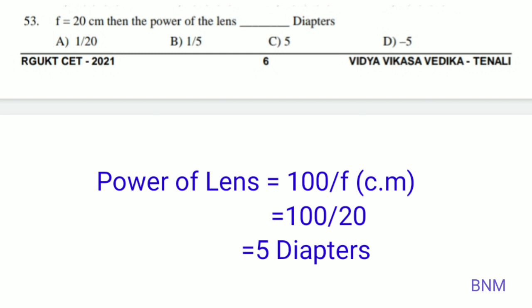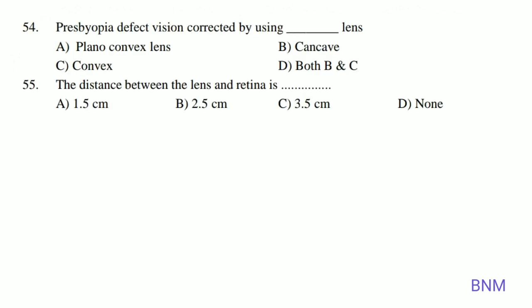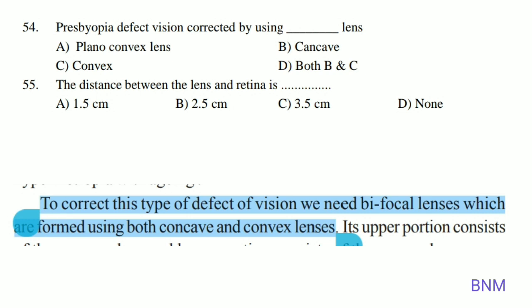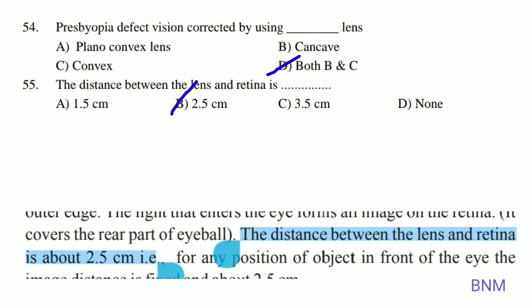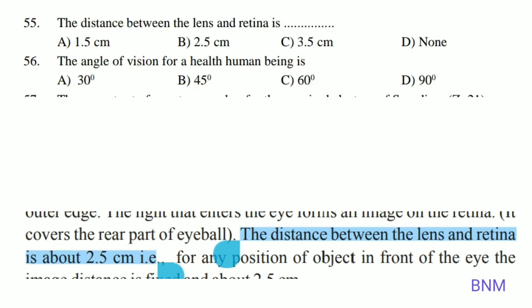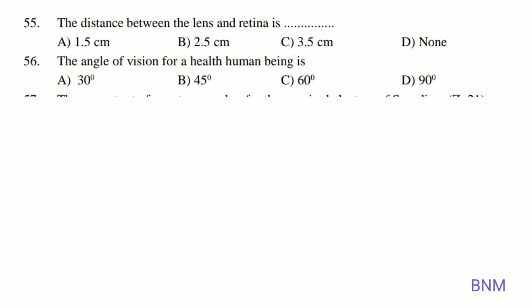If F equals 20 cm, then the power of the lens in diopters: power equals 100 divided by F in cm, so 100 divided by 20 equals 5 diopters. The right answer is 5 diopters. Presbyopia defect of vision is corrected using bifocal lens — both concave and convex lens, options B and C. The distance between the lens and the retina is 2.5 cm, and the angle of vision for a healthy human being is 60 degrees.